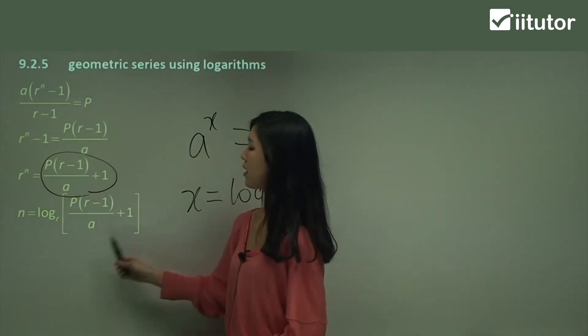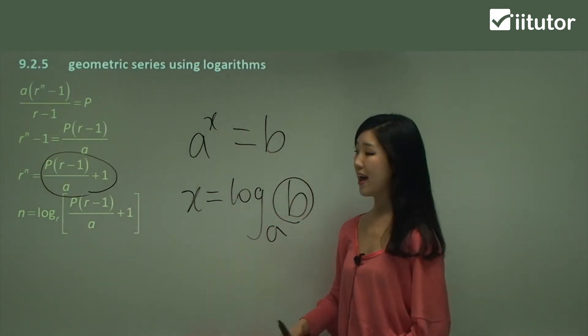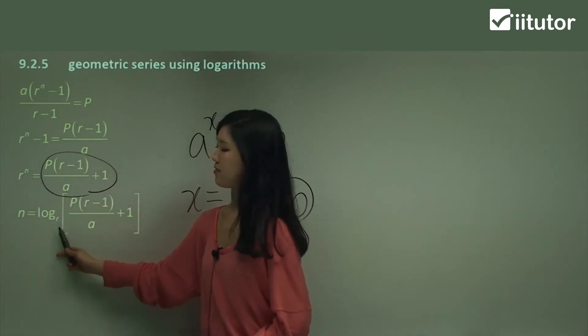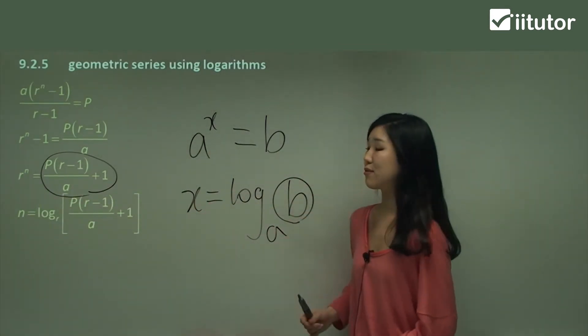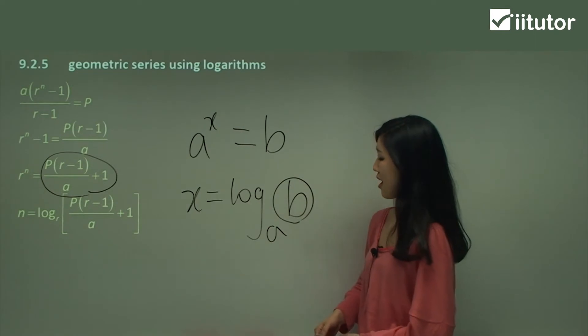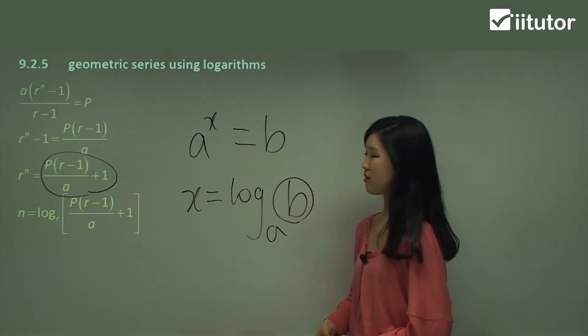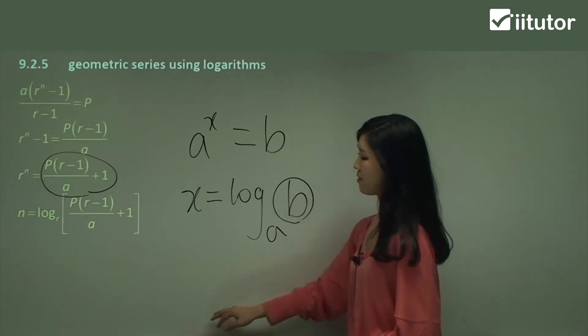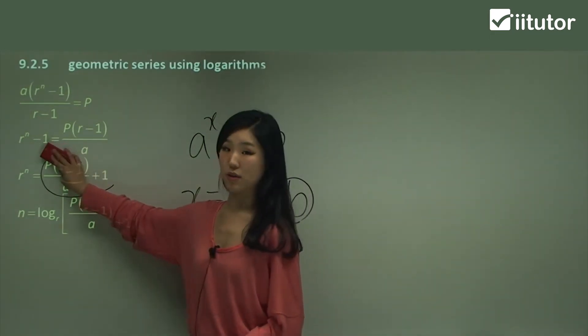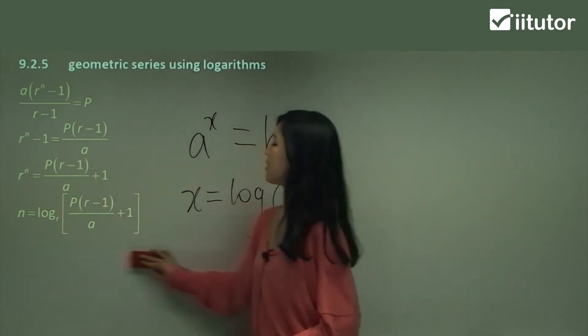In this case, this b is this big bunch here—the whole thing is b. So that's why we put the whole thing after the log, and the r just goes down as a little base. Basically we're using this rule again, so I hope you're familiarized with it even if you haven't known very well about it before. This is our log rule. I'm going to try to use this into our questions.